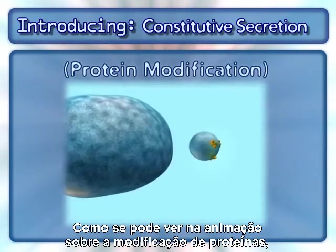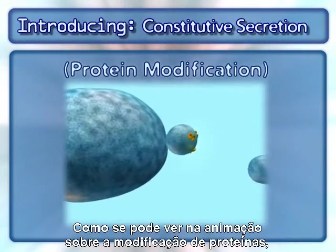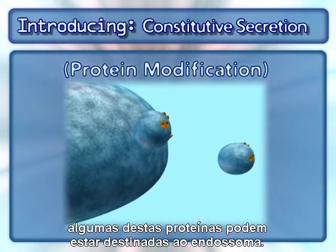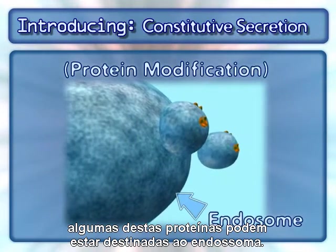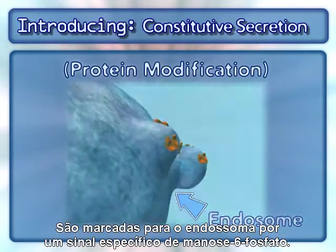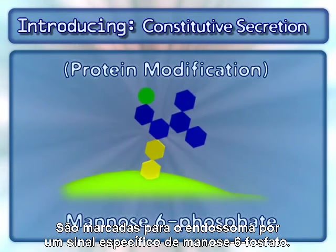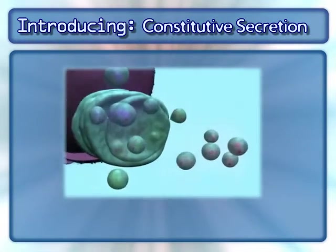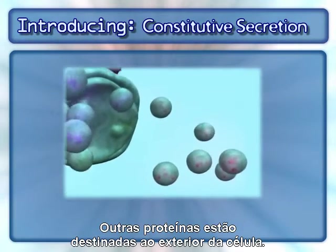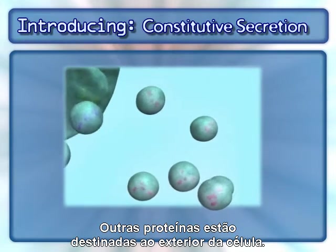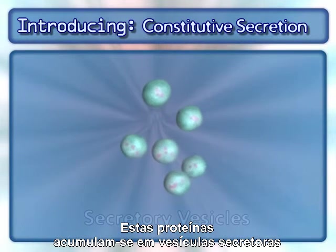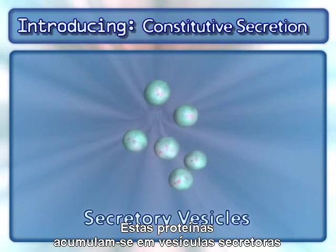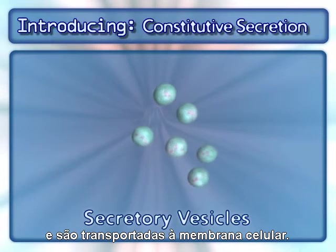As seen in the protein modification animation, some of these proteins can be destined for the endosome. They are targeted to the endosome by a specific mannose phosphate signal. Other proteins are destined for delivery outside of the cell. These proteins are packaged into secretory vesicles and delivered to the cell membrane.